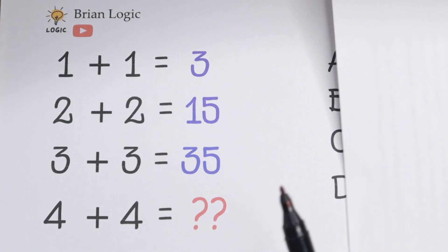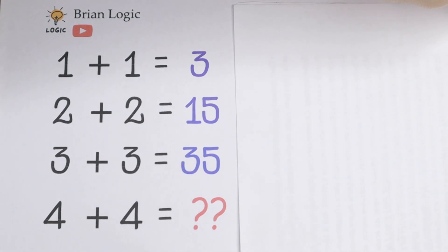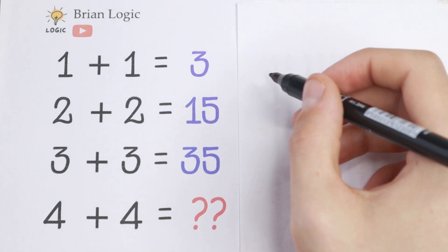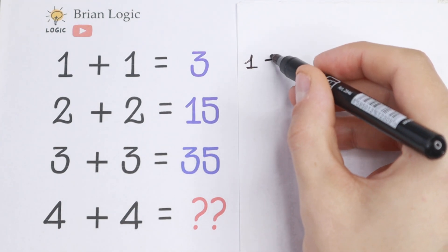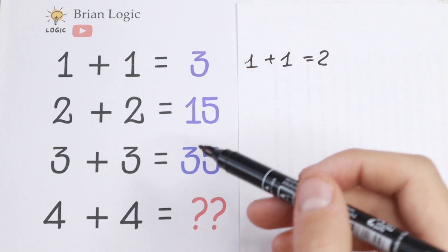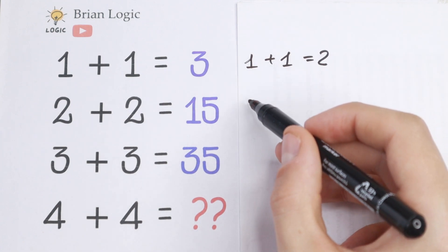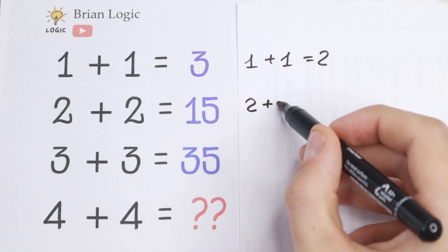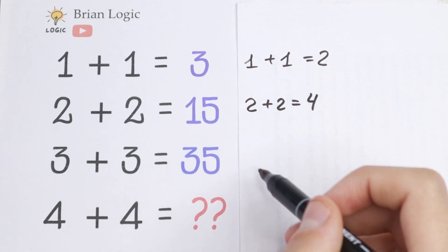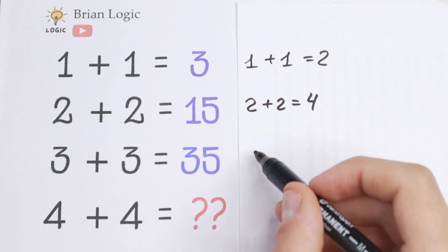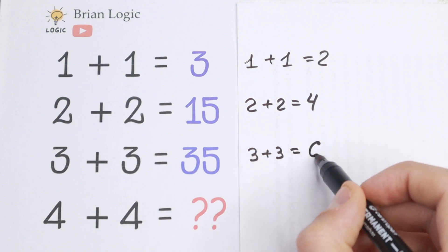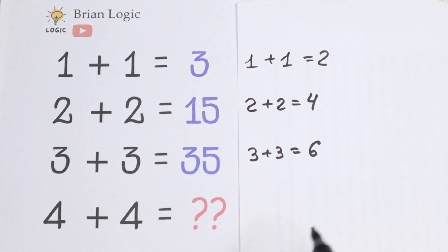Let's try to solve it. First of all, we can see that one plus one equal to three is incorrect, because we know that one plus one equals two. So let's write the correct answers first. Two plus two is not equal to fifteen, but two plus two equals four. And in the third row, three plus three equals six. And of course we write our final row.